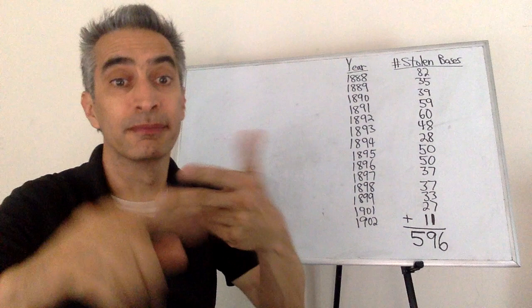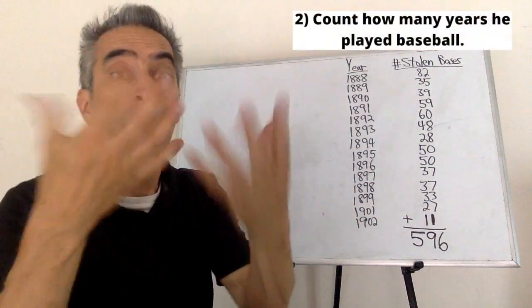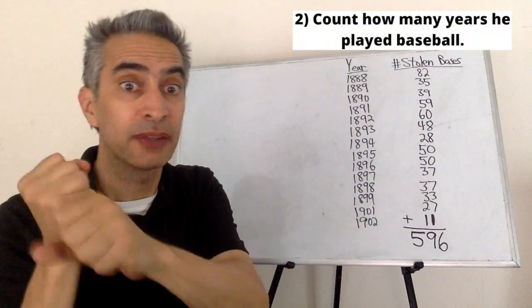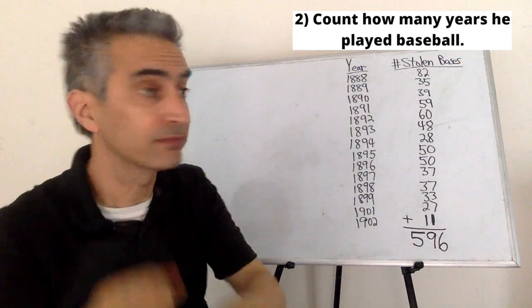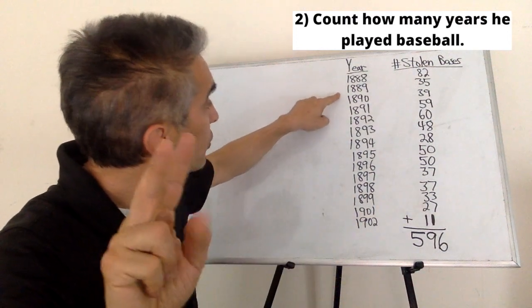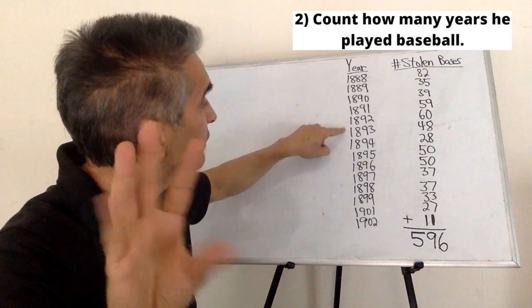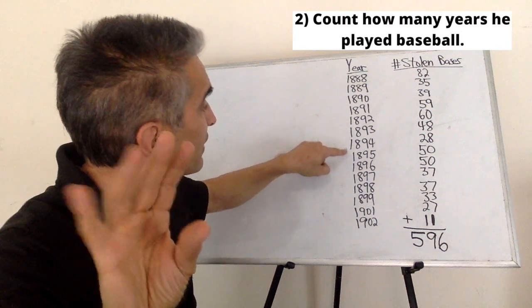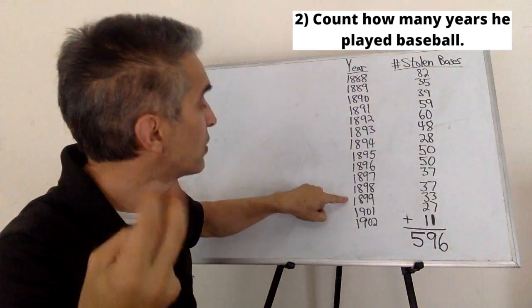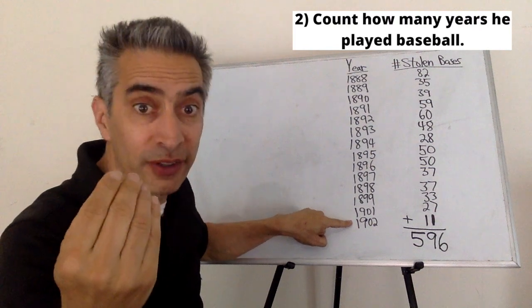The next step: count how many years he played baseball. There's 1, 2, 3, 4, 5, 6, 7, 8, 9, 10, 11, 12, 13, 14. He played 14 years.